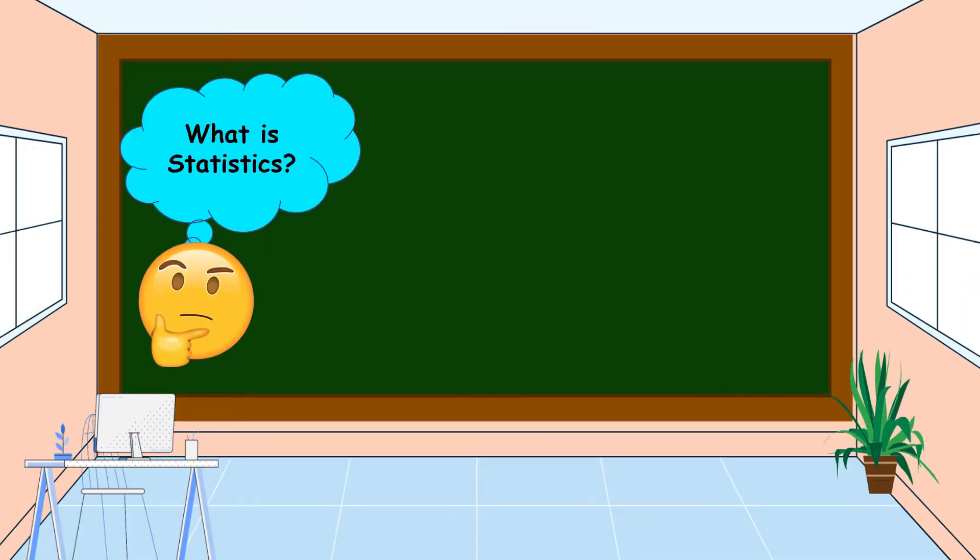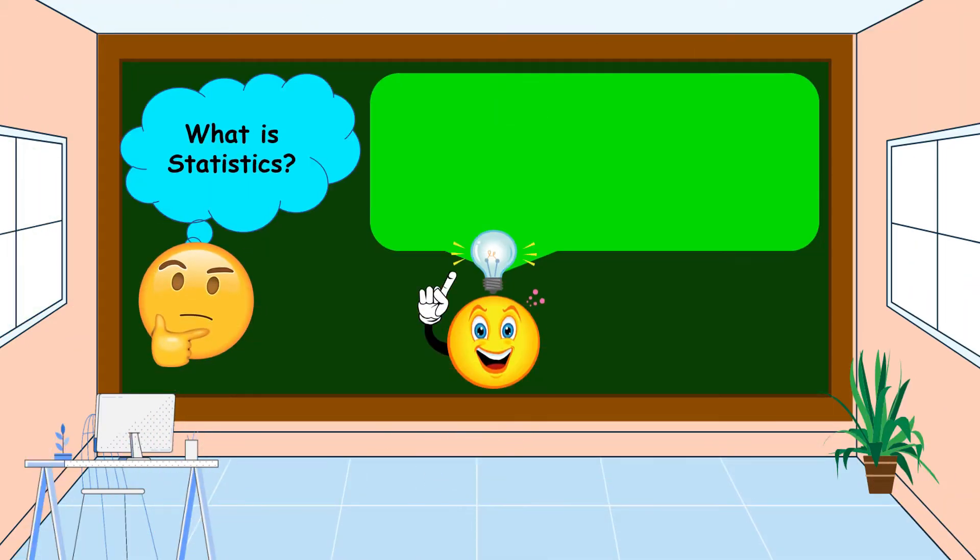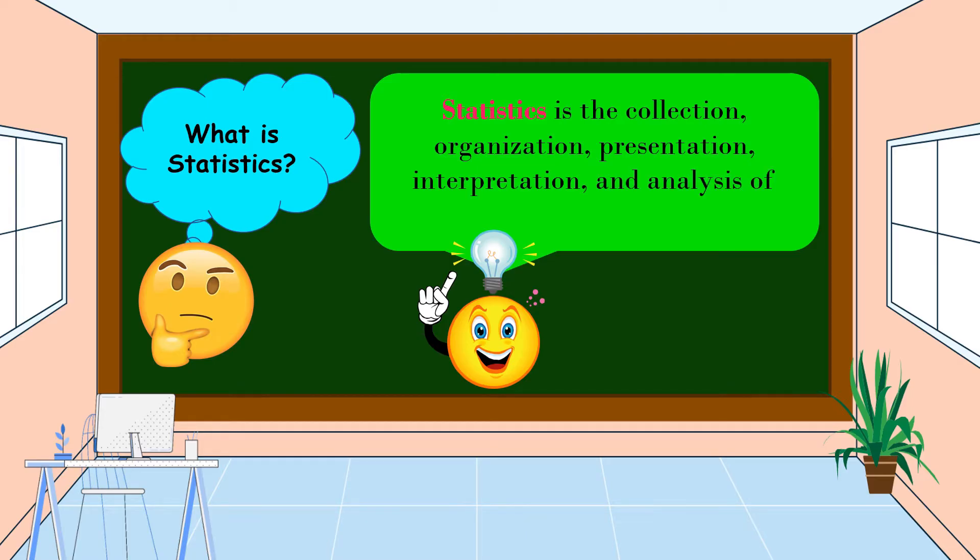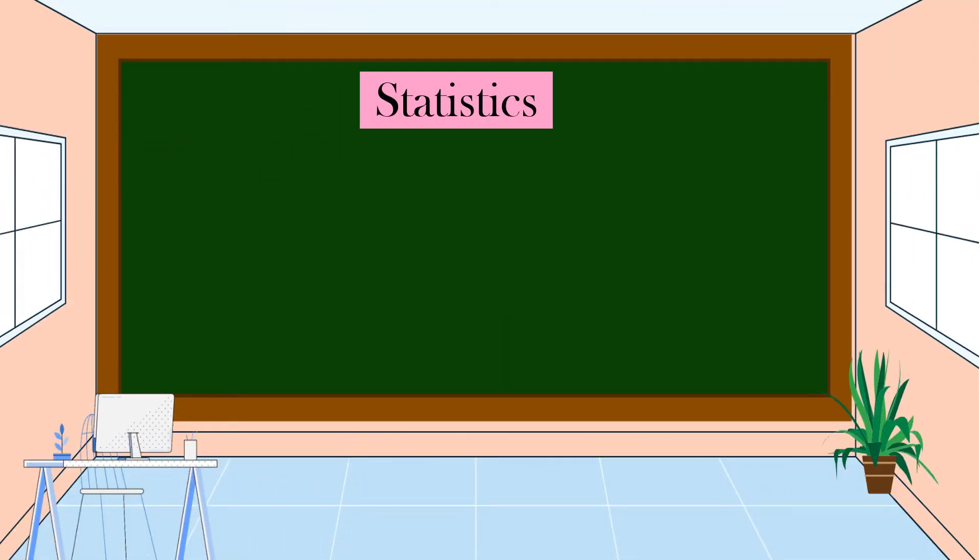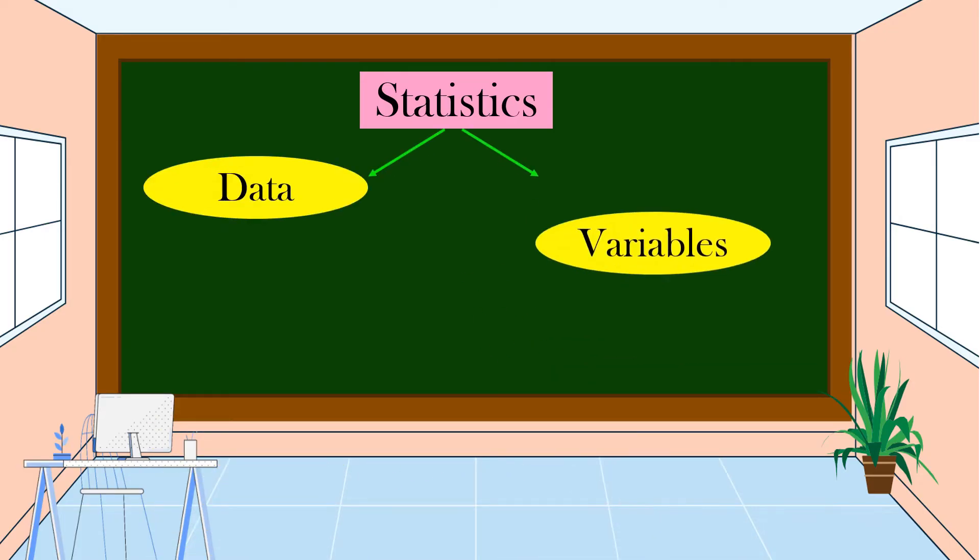What is statistics? Statistics is the collection, organization, presentation, interpretation, and analysis of data. There are two important elements in statistics: these are the data and variables.